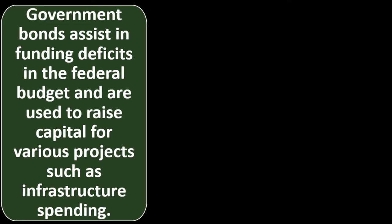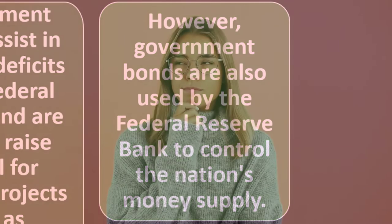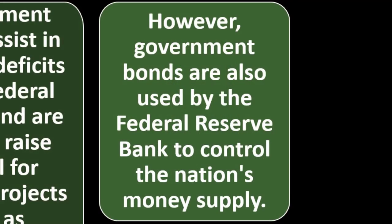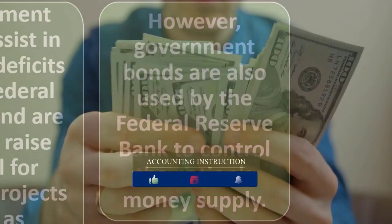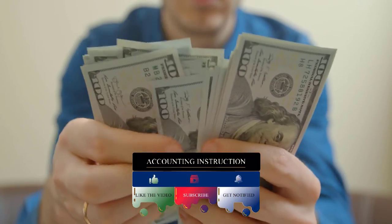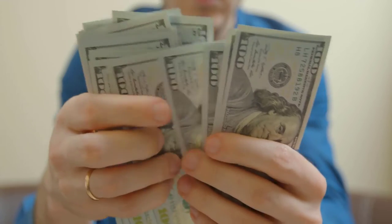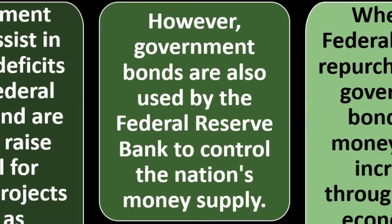Government bonds assist in funding deficits in the federal budget and are used to raise capital for various projects such as infrastructure spending. However, government bonds are also used by the Federal Reserve to control the nation's money supply. Governments raise money through taxation but can also take on debt by issuing bonds. Bonds can also be used by the Federal Reserve to manipulate the money supply, trying to keep the market growing at a desired rate without overheating or hitting recession.